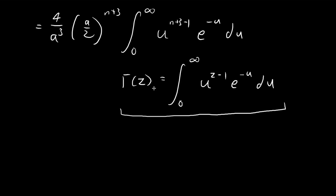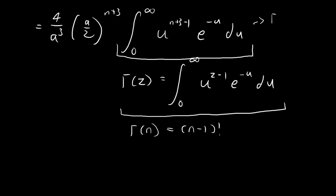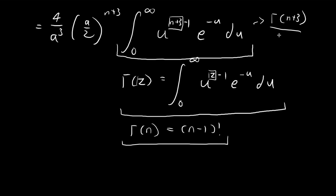Using integration by parts, you can prove that when the input is an integer n, the gamma function equals (n−1) factorial. In our case, this integral is exactly the gamma function evaluated at n+3, matching z = n+3. According to the formula, Γ(n+3) = (n+2) factorial. I won't go into the derivation here — you can try it yourself using integration by parts — but I'll use this result directly. So the entire integral equals (n+2) factorial.